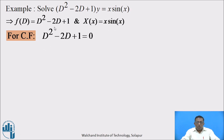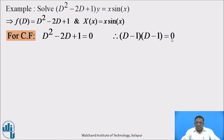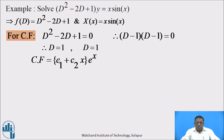For CF, we write the auxiliary equation: D²-2D+1 = 0. Factorizing: (D-1)(D-1) = 0, giving D = 1 and D = 1. The roots are real and equal. Hence by the rule of complementary function: CF = (c₁ + c₂x)·e^x.